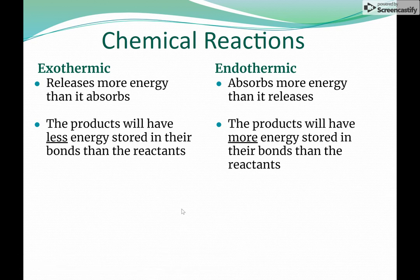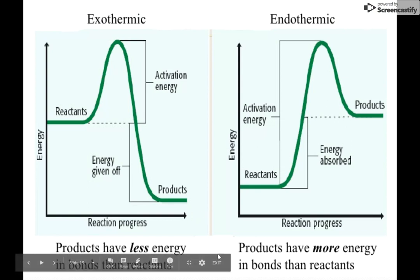We can actually graph chemical reactions based on this pattern. Here we have the exothermic reaction. We have our reactants at a specific energy level. Then we're going to have to add energy - that energy is the activation energy. When it gets to a certain point, it's going to react and it's going to drop. This is the energy that it's going to release, and this is the energy that is the net release of energy. The products are down here at a lower energy level.